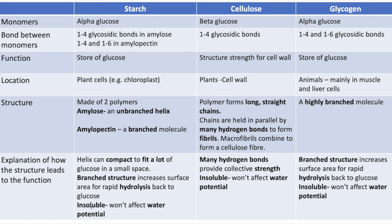Cellulose is made of beta glucose joined by 1–4 glycosidic bonds, producing long straight chains with no branching. These chains lie parallel and close together, allowing hydrogen bonds to form between them. Although a single hydrogen bond is weak, the large number of them holding the chains — forming fibrils, microfibrils and macrofibrils — provides the structural strength of cellulose.